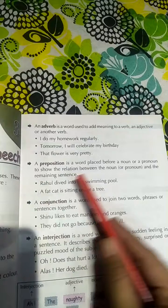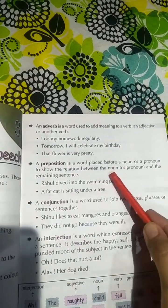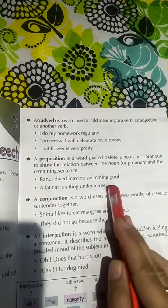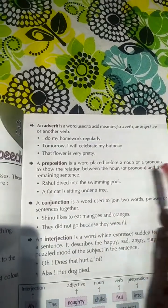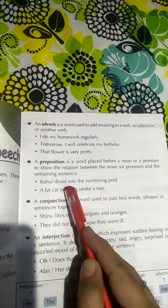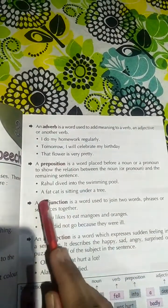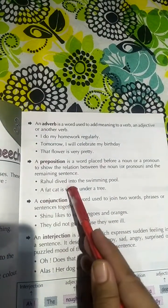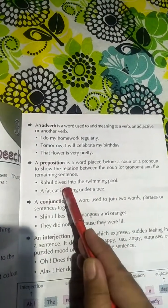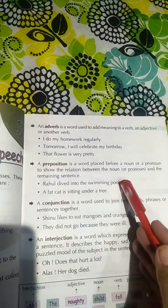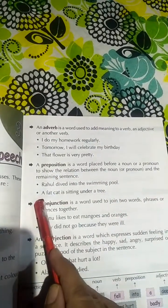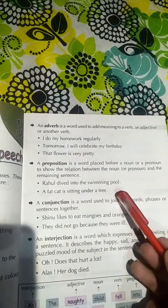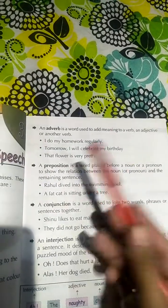Preposition kya hai — a word placed before a noun or pronoun. Jis bhi words ke use mein ham before noun or pronoun karte hai, that is the preposition. For example: 'Rahul dived into the swimming pool' — into is a preposition. 'A fat cat is sitting under a tree' — under is the preposition.